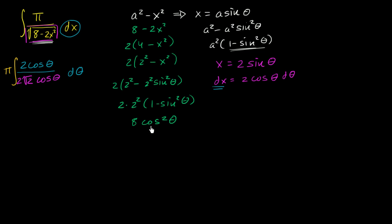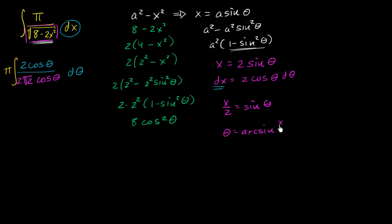Now you might be saying: if I take the square root of something squared, wouldn't that just be the absolute value of cosine theta? In order to drop the absolute value, I would have to assume that cosine theta is positive. We can make that assumption because, solving for theta, we get theta equals arcsine of x over 2. The arcsine function, as traditionally defined, returns a theta between negative π/2 and π/2, and in that range cosine theta is always positive.